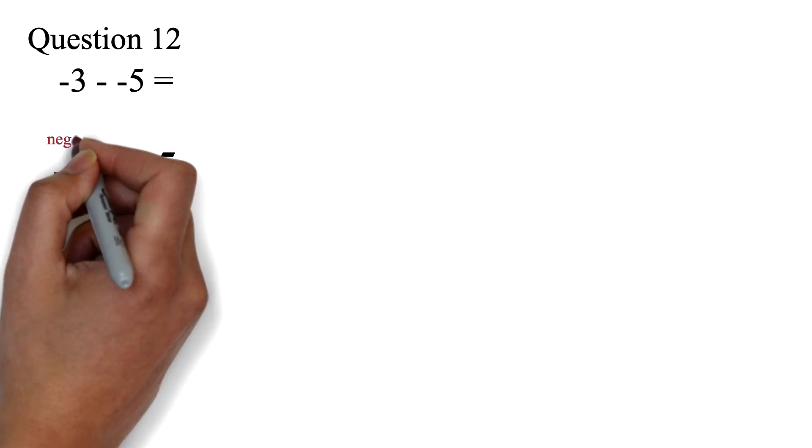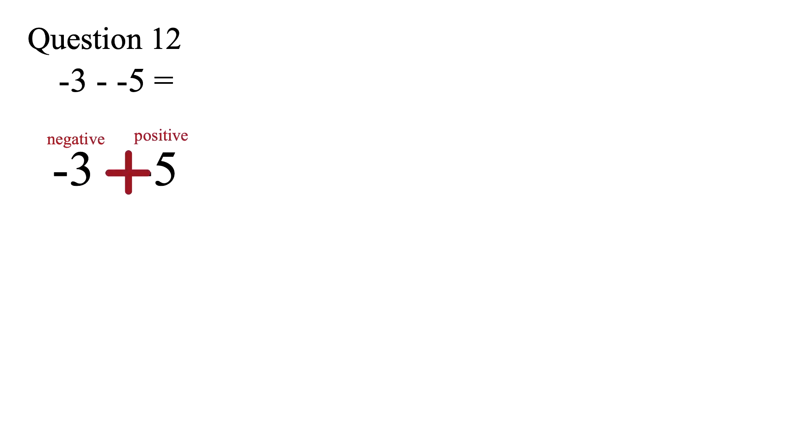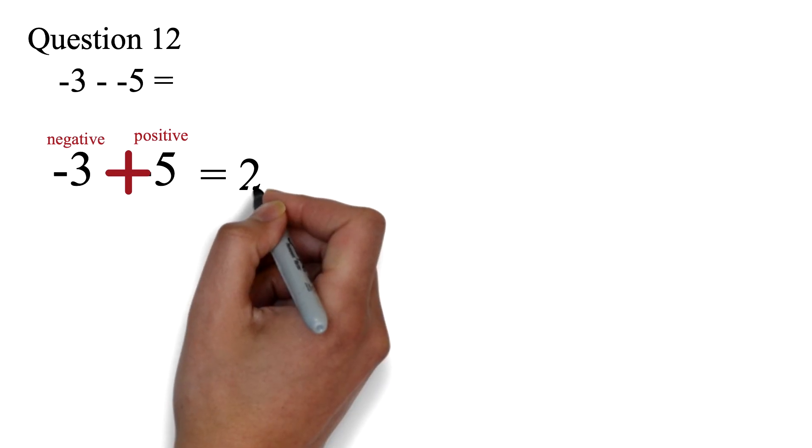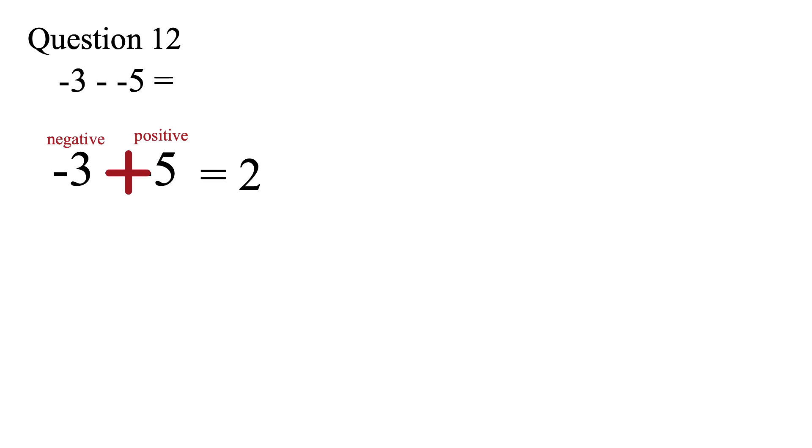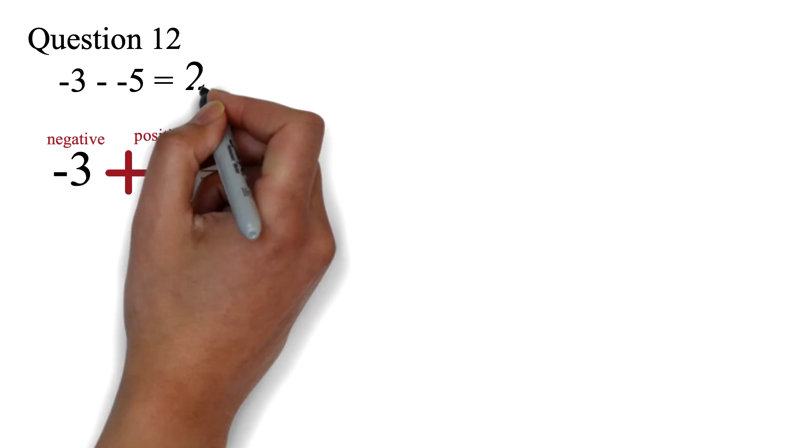So this is the same as negative 3 plus 5. We have one of the values as negative and the other as positive. We said if they have different signs, you will subtract and keep the sign of the bigger number. So we subtract 5 minus 3 to get 2. Since the positive 5 is the bigger number, our answer will be positive 2, which is simply 2.